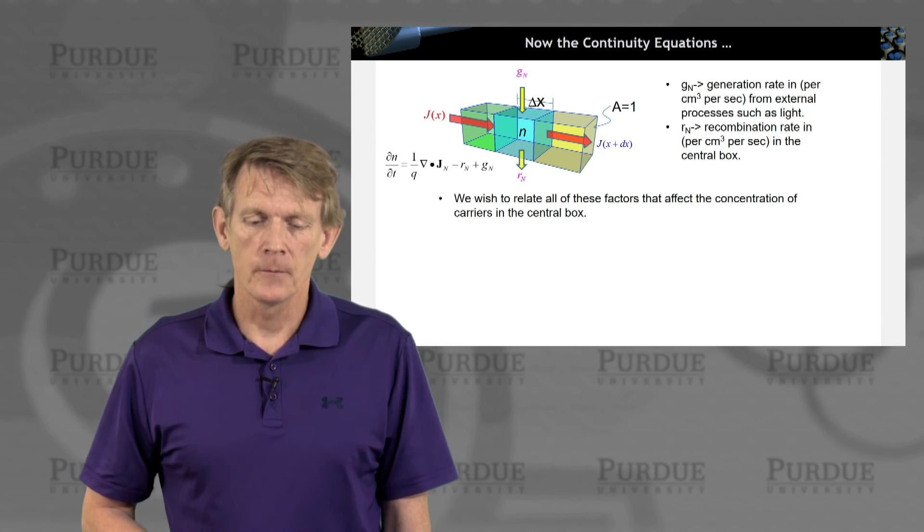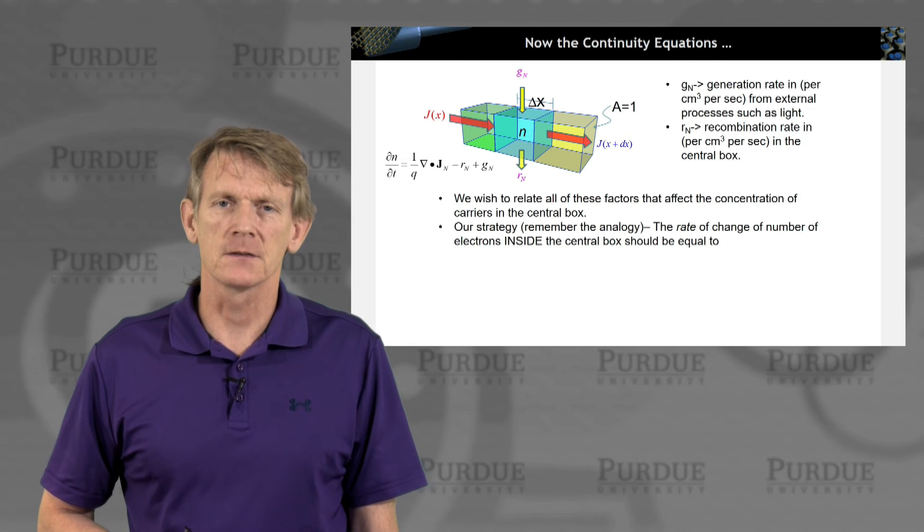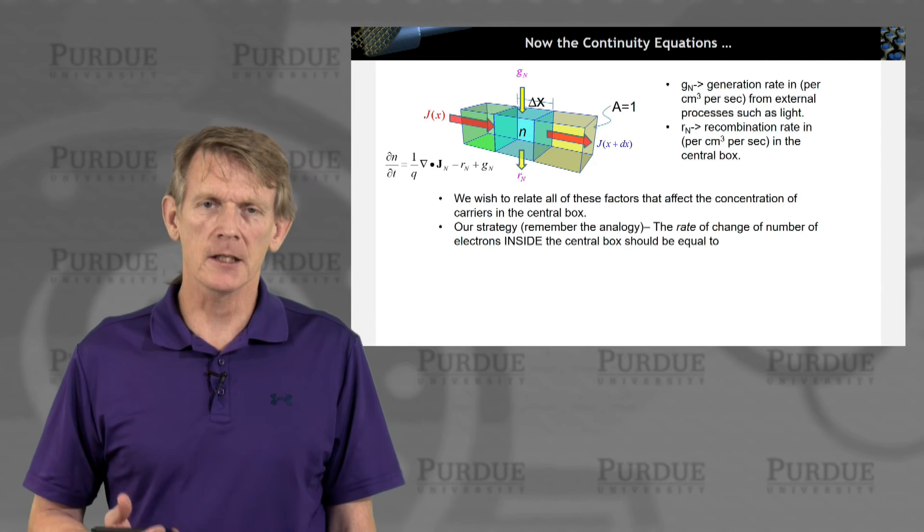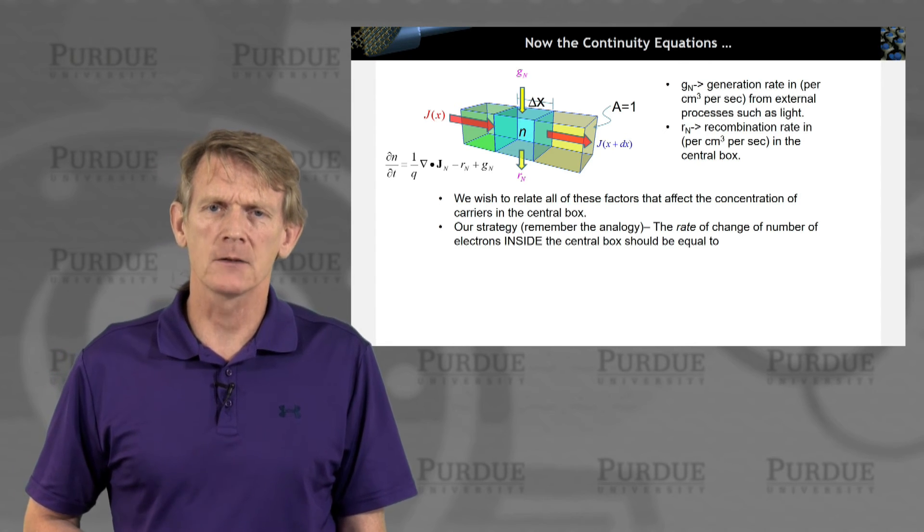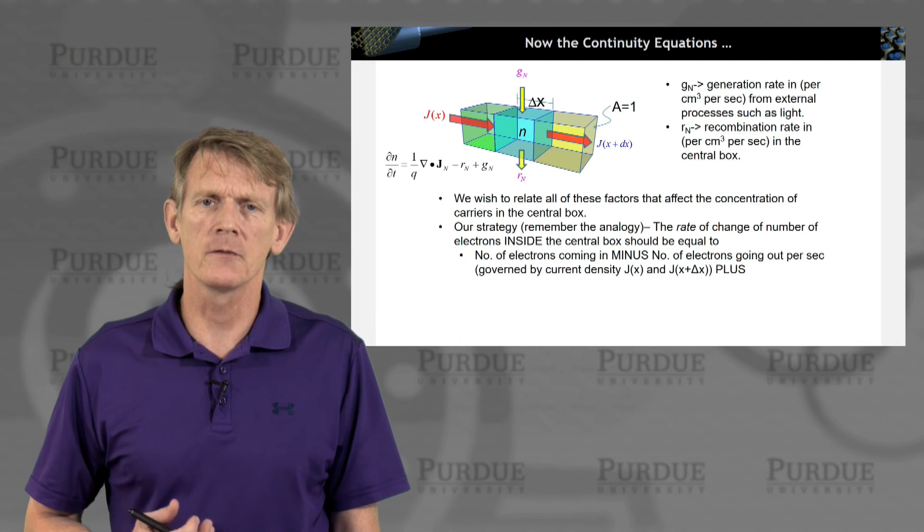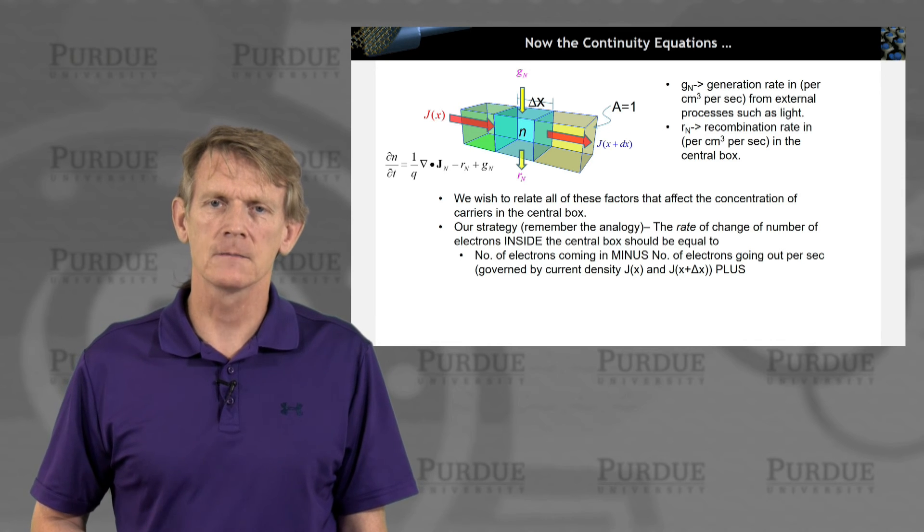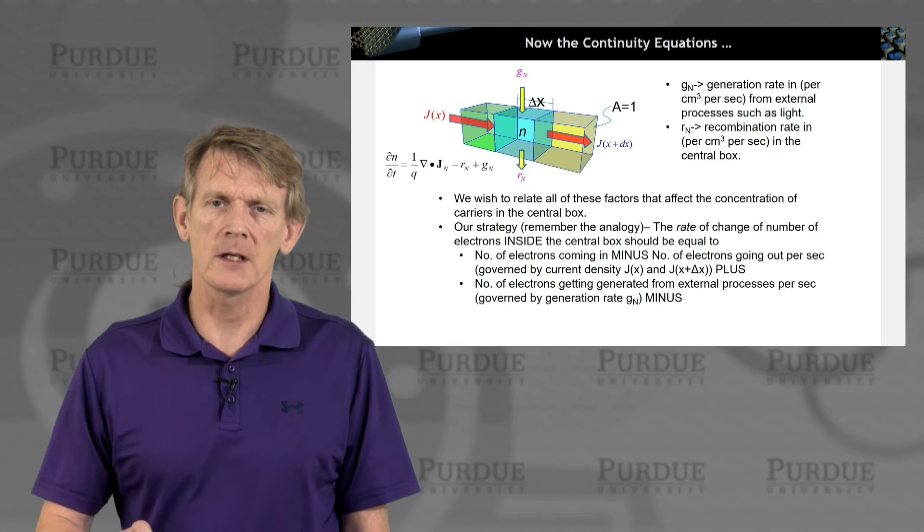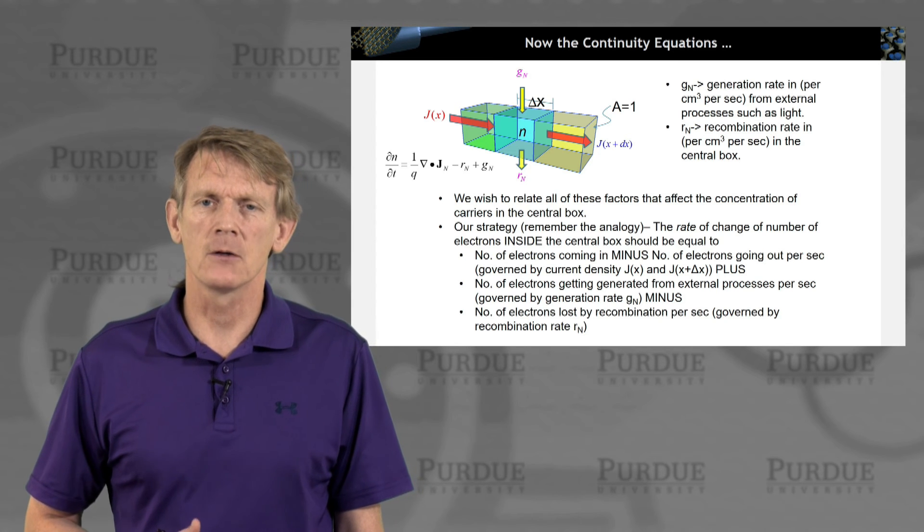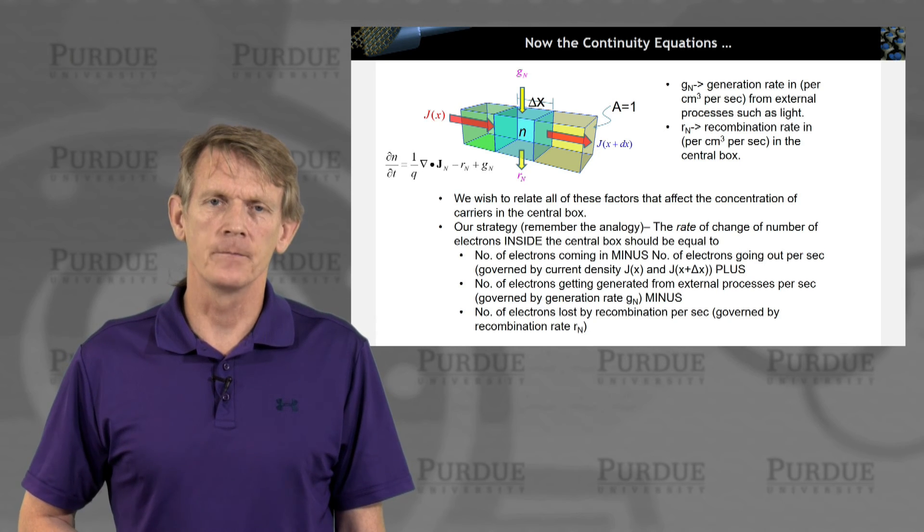Okay, so now we want to relate all of these factors that come into a box like this. And the strategy is very simple. It's very classical. It's that the rate of change of number of electrons inside the central box is equal to the number of electrons coming in minus the number of electrons going out at the interface, plus the number of electrons getting generated by an external force like light with a generation rate, minus the number of electrons that are recombining per second governed by some recombination rate. So it's truly a classical rate equation that is being depicted here.